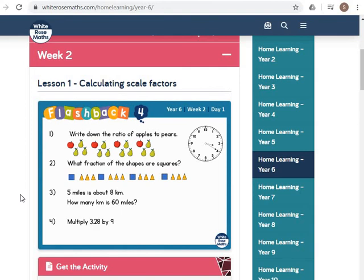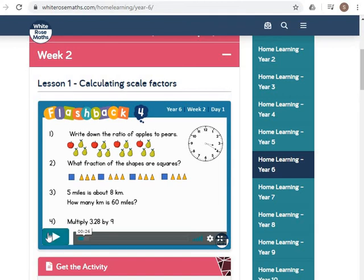So first one, write down the ratio of apples to pairs. Looking at the pattern, question two, what fraction of the shapes are squares. Five miles is about eight kilometers. How many kilometers is 60 miles? And question four, multiply 3.28 by nine. Also have a look at the clock. Remember your knowledge of time so you can tell the time for that day.